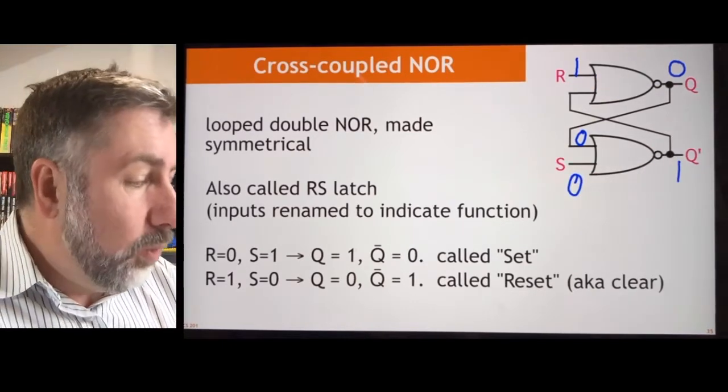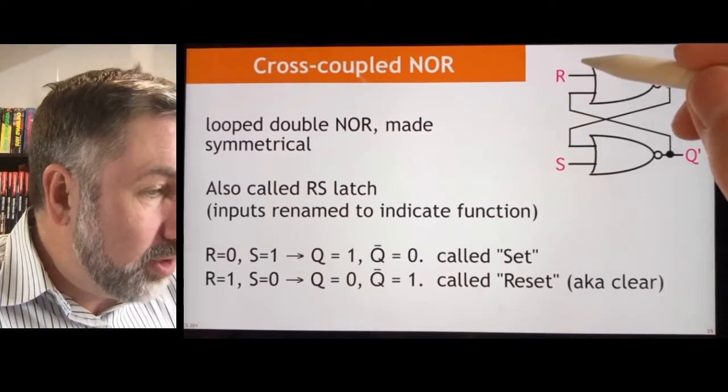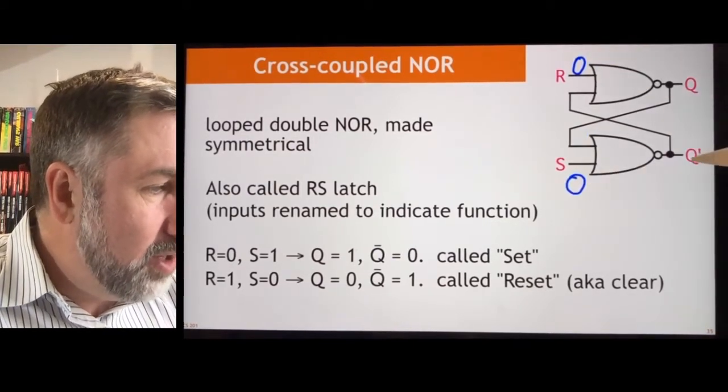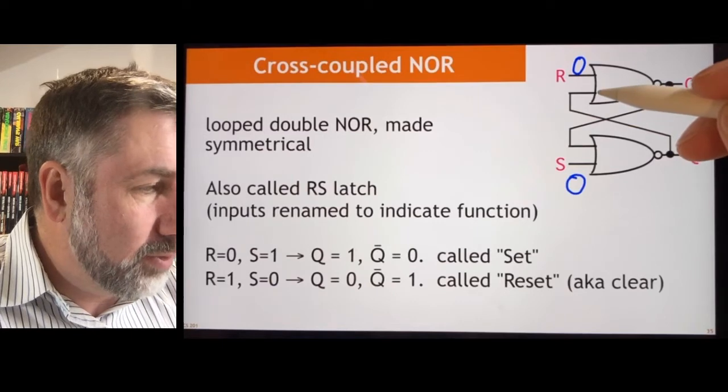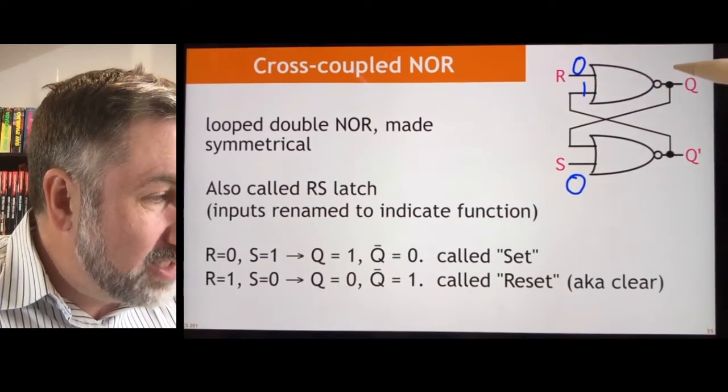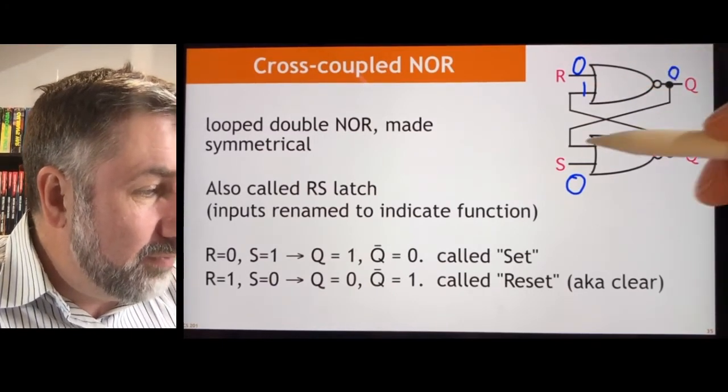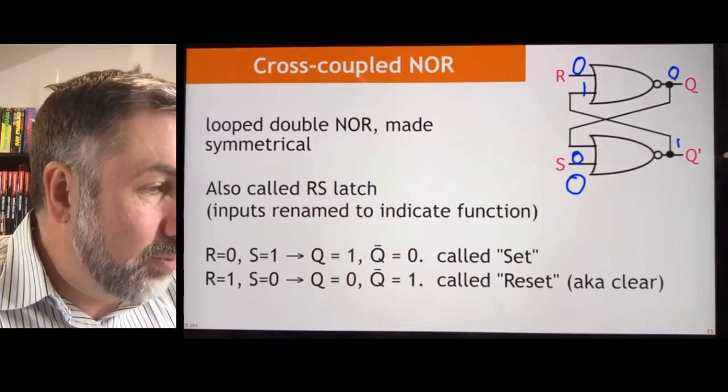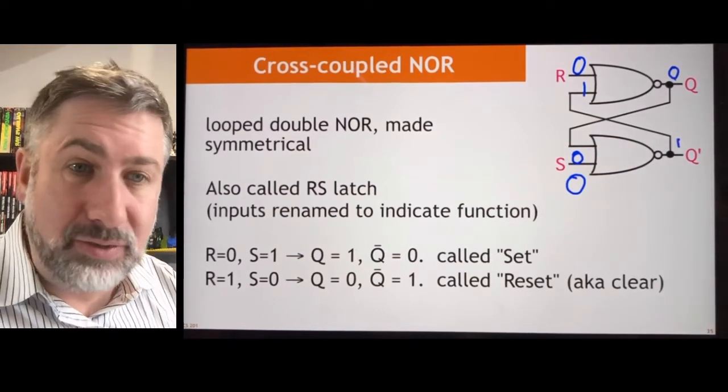What happens if both are 0? If both inputs are 0, then whatever value is here gets reinforced here, right? If that's a 1, then that forces that to be a 0. If this is a 0, that forces that to be a 1. So we can store a value as well.